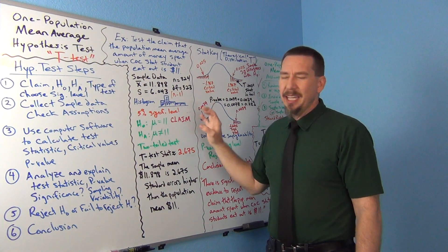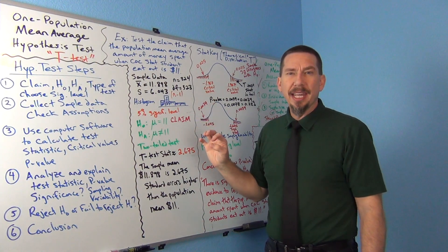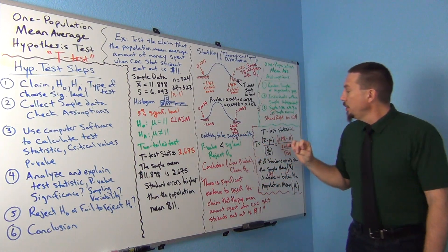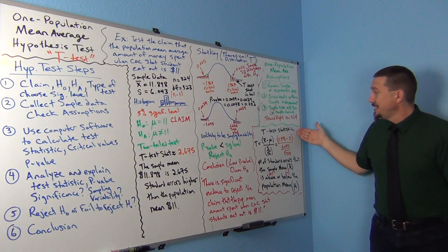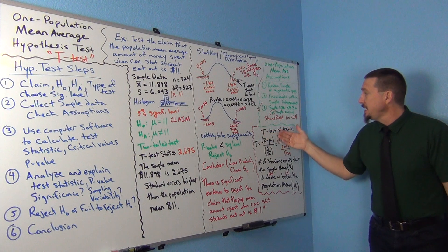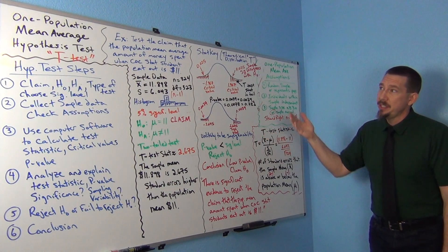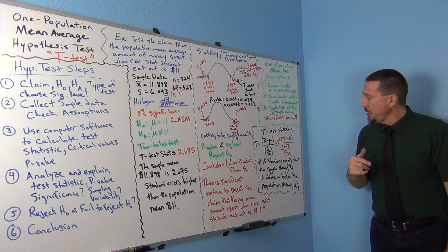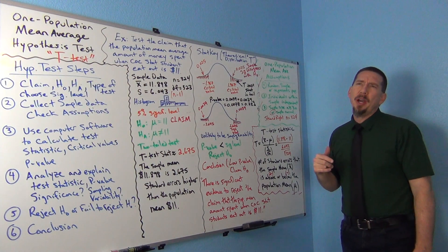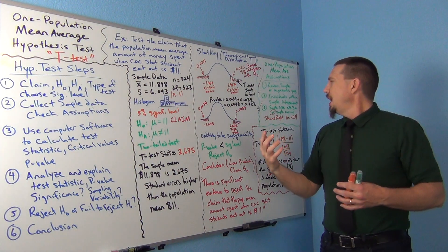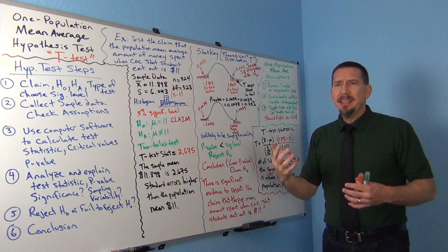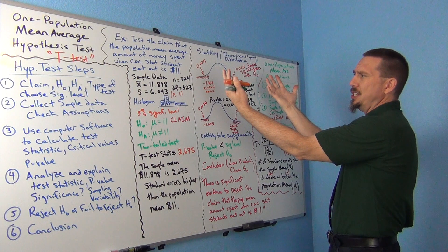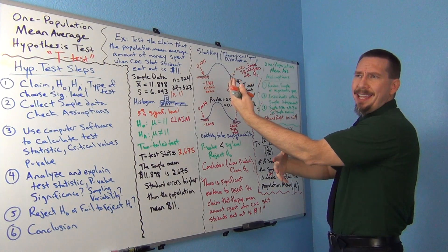How does it work? I'm going to get a little more into the calculations. One of the first things we need to figure out is the test statistic. We're using a t-test statistic, called a t-test because we're using the t-distribution. In general, a one-population t-test — think of it as the sample minus the population divided by the standard error.